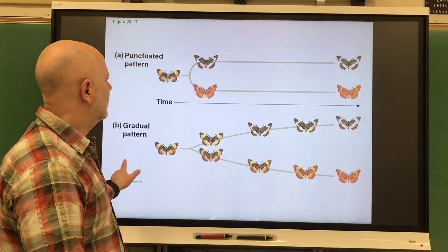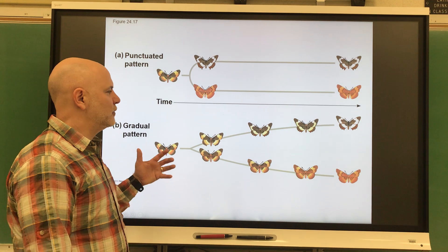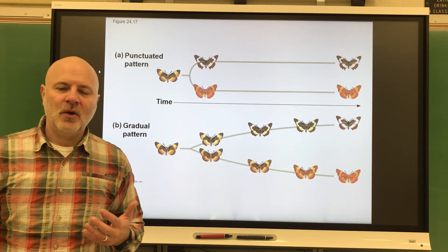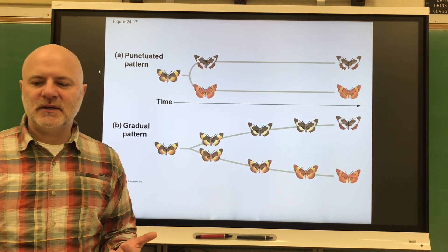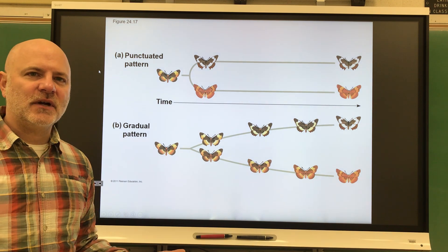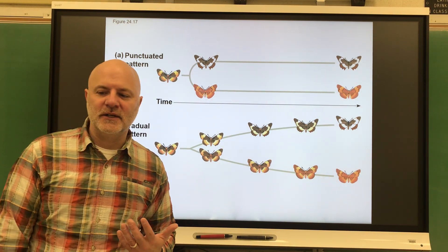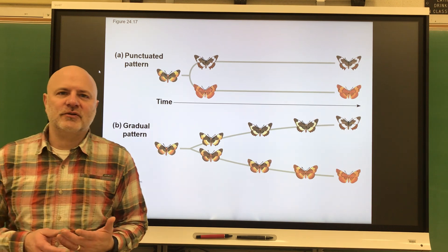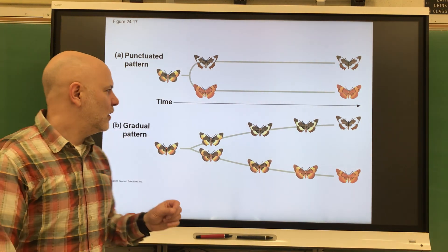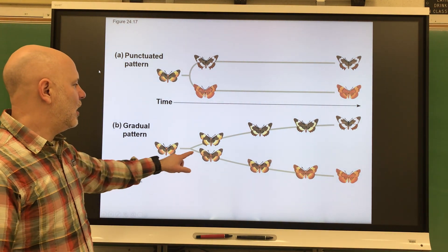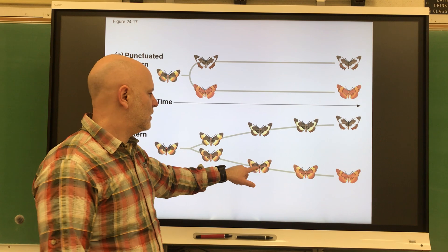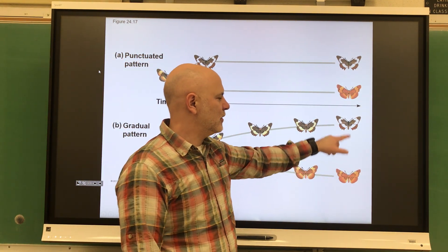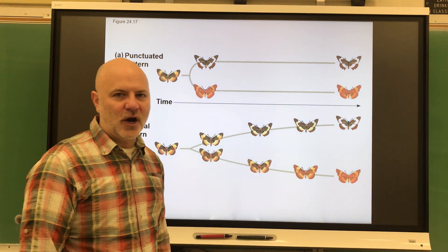Let's look at two patterns in which organisms evolve. One is gradualism — the wide variety of organisms in existence are the result of the accumulation of gradual changes over time. Small changes over short periods of time result in large changes over long periods of time.